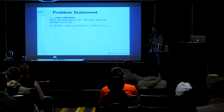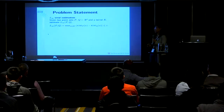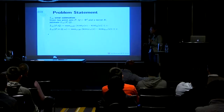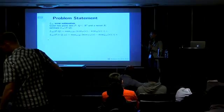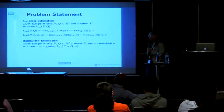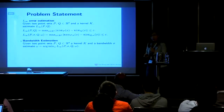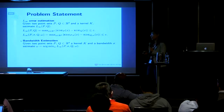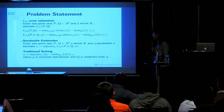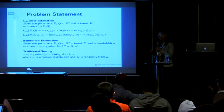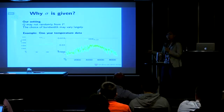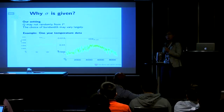In our paper, we want to solve two problems. First is the L-infinity error estimation — how can we evaluate it, because it's really hard since we can't enumerate every point in the domain. The second problem we want to solve is: given points P and Q and bandwidth for P, how can we get the bandwidth for Q such that the L-infinity error is minimized. This is different from the traditional setting, where the underlying distribution mu is unknown and Q is drawn randomly from mu, and people usually concern themselves with L1 and L2 error. In our setting, Q may not come from P, like in the discrepancy method, and the choice of bandwidth may vary largely.